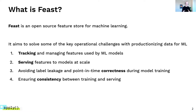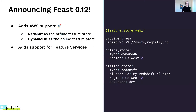The whole space of operational data for ML is massive with a lot of problems to be solved, but those are some of the things we've been working on in the last couple of months. I'm super excited to announce today that Feast 0.12 is out. We've added two new capabilities: the first one is AWS support. We've got support for Redshift as the offline store and support for DynamoDB as the online store.